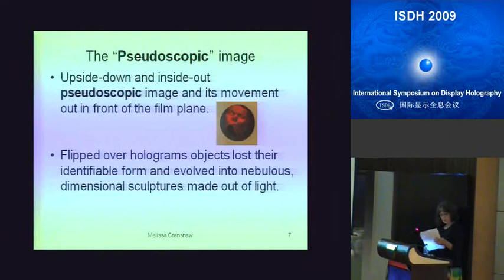Especially intriguing were the wonders of the upside-down and inside-out pseudoscopic image and its movement out in front of the film plane. Flipped-over holograms of little coins, castings, and found objects lost their identifiable form and evolved into semi-transparent, nebulous, kinetic, dimensional sculptures made out of light. Economic necessity limited us to film rather than glass, which allowed us to cut up images and reposition sections, overlapping pseudoscopic and virtual images collage-style.